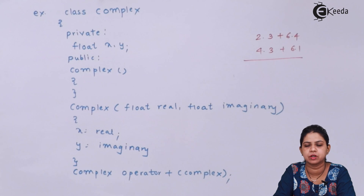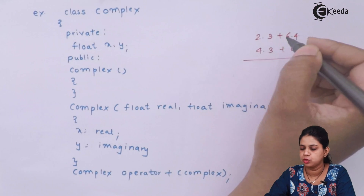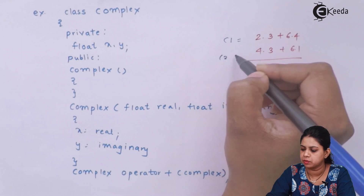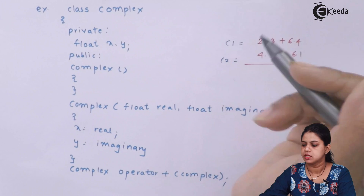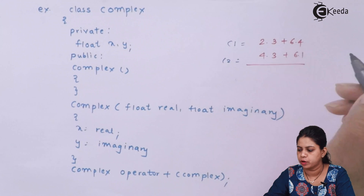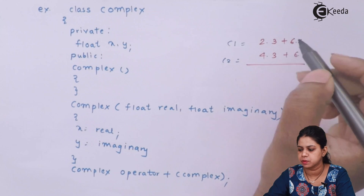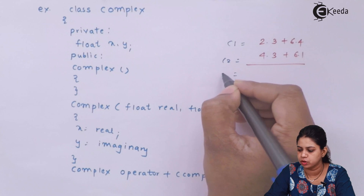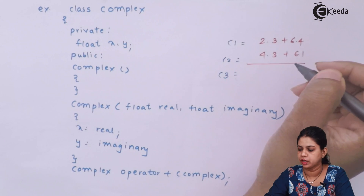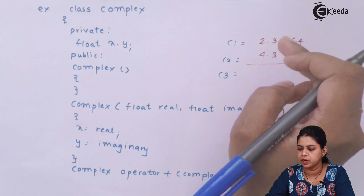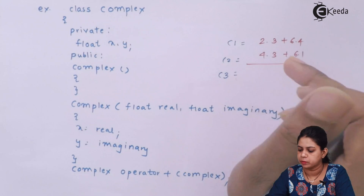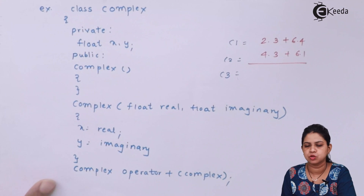Suppose I have two complex numbers. My first complex number is 2.3 + 6.4i and my second complex number is 4.3 + 6.1i. If I want to perform the addition of these two complex numbers, I will add the real parts and the imaginary parts separately, and store the answer inside a third variable c3. This is an example of binary operator overloading. We call it binary because this operator works with two operands.